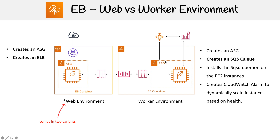On the right hand side, we have our worker environment, and this is for background jobs. You'd have your EC2 instances in an auto scaling group, and it also creates an SQS queue — if you didn't have a queue, it creates one for you. It also installs the SQS daemon on all those EC2 instances so they can seamlessly communicate with the SQS queue. Additionally, CloudWatch will watch the number of instances, so if you're under capacity it will spin up more instances and adjust the auto scaling group.